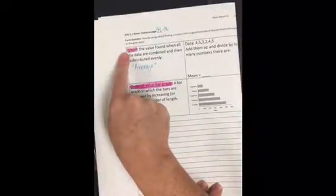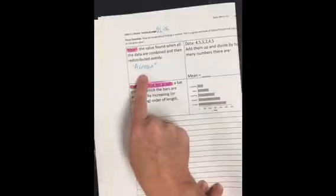One, that the term mean is just the new term that we're going to be using for average. It just means that if we have a stack of blocks that are all random sizes, that if we were to re-stack them and make them all the same height, that number would be the average or the mean.